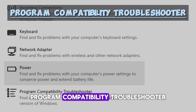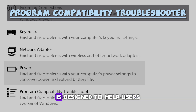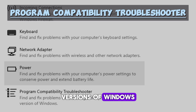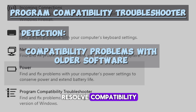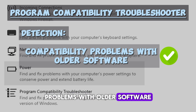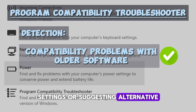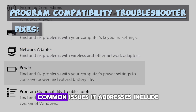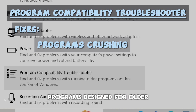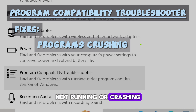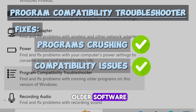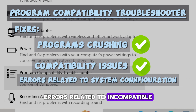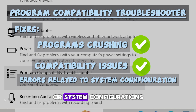The Program Compatibility troubleshooter is designed to help users run programs that were designed for earlier versions of Windows but may encounter compatibility issues on newer versions. It can detect and resolve compatibility problems with older software by applying compatibility settings or suggesting alternative compatibility modes. Common issues include programs not running or crashing on newer Windows versions, and errors related to incompatible software dependencies or system configurations.